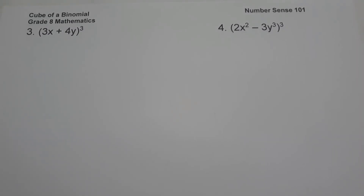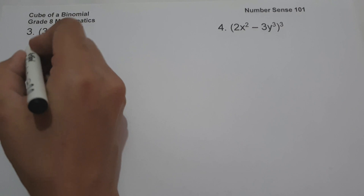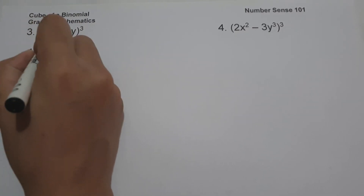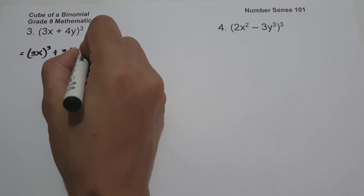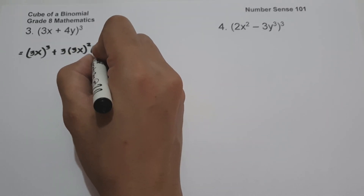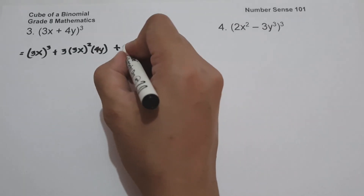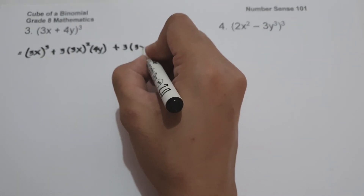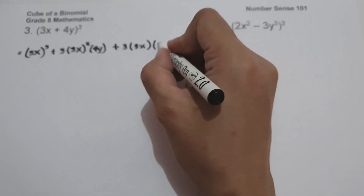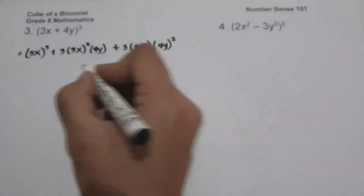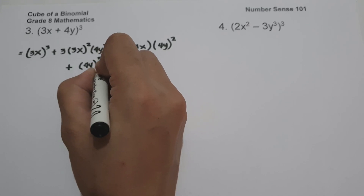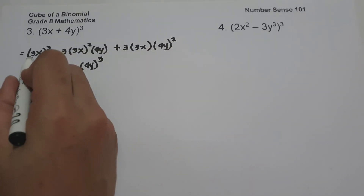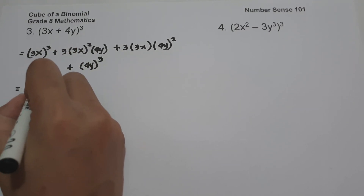Example 3: we have the quantity (3x + 4y) raised to 3. To simplify, the cube of the first term is 3x raised to 3, plus the constant 3 multiplied by the square of 3x — that is (3x)² — multiplied by the second term 4y. To find the third term, we have 3 multiplied by the first term 3x times the square of the second term (4y)². The last term is the cube of 4y, that is 4y raised to 3.